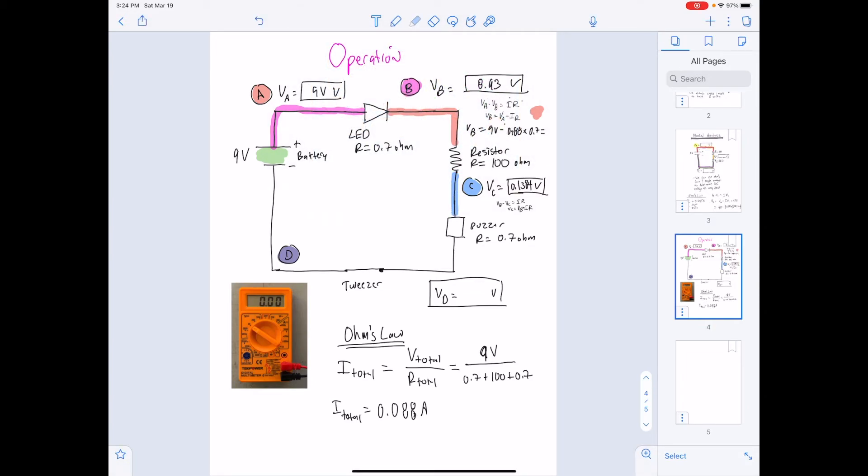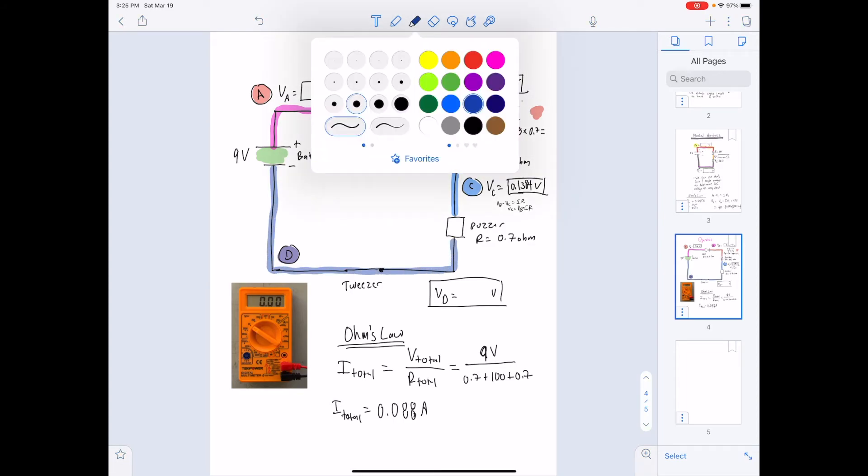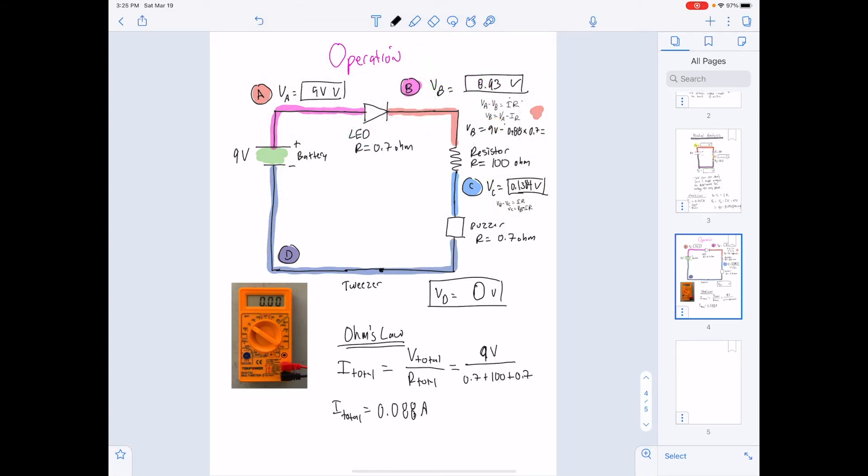If we use Ohm's law, we can calculate that. And then finally, at node D, node D is our ground voltage. So this one should, by definition, be what we refer all of our measurements to in zero volts.